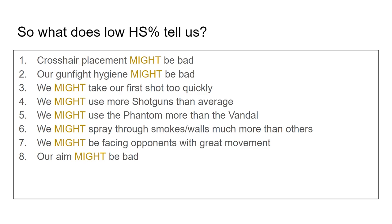Certain stats don't tell us how good we are at Valorant. There are many factors that can go into a low headshot percentage, and it's impossible to tell which of these factors is causing it. It could be our crosshair placement, our gunfight hygiene, we could rush our shots, maybe we use shotguns, maybe we favor the Phantom, maybe we spray a lot, maybe we're facing opponents with great movement, or maybe our aim is bad. Not all of these factors are negatives. Using the Phantom, or spraying through smokes and walls, or using shotguns — these are not bad things, and they could be causing a lower headshot percentage, which inherently means that a low headshot percentage is not necessarily bad.